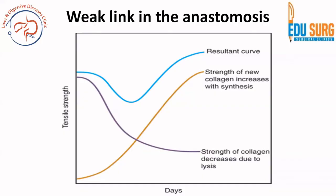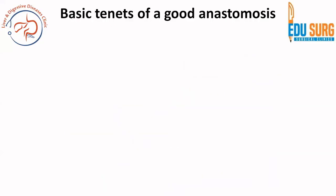You have to understand that when collagen decreases due to lysis versus when new collagen synthesis starts — roughly between the third and sixth day, between phase one and phase two — the tensile strength is at its lowest. That is why anastomosis ward rounds are critically important between the third and fifth day, because that is when most leaks occur. Unless there has been a technical error, in which case it will leak on the first day.